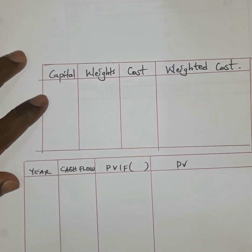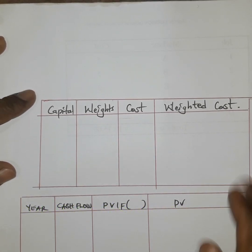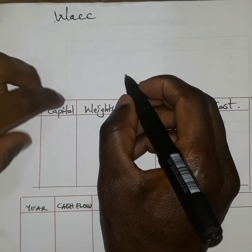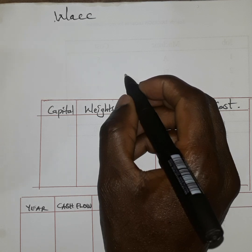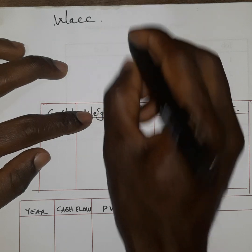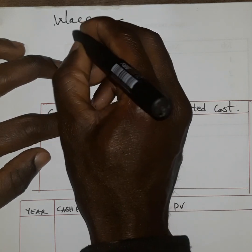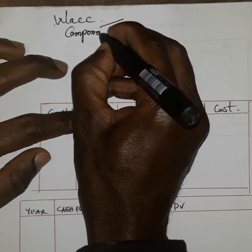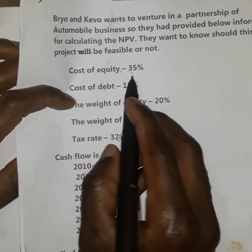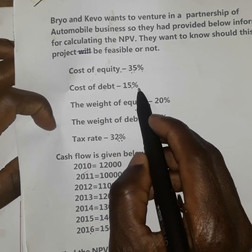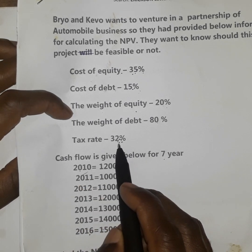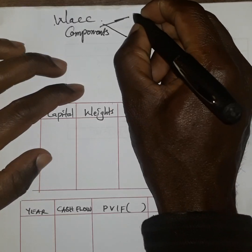When we talk about WACC, we are simply referring to the average of all the costs or the average of all the capital structures associated with a particular business. The components in this question are: cost of equity is 35%, cost of debt is 15%, weight of equity is 20%, weight of debt is 80%, and tax rate is 32%.